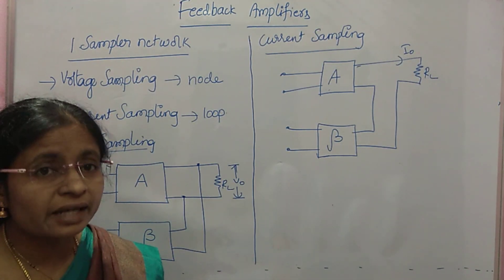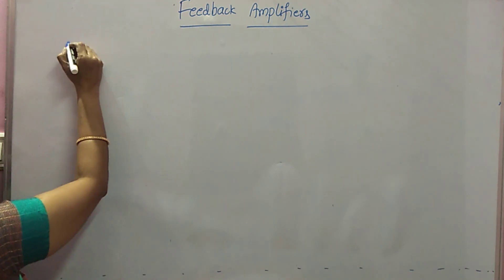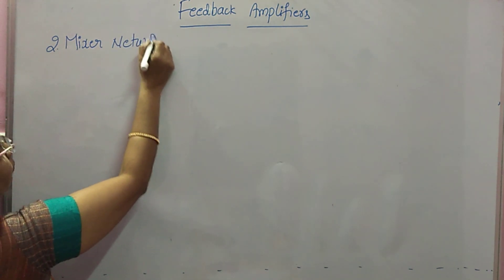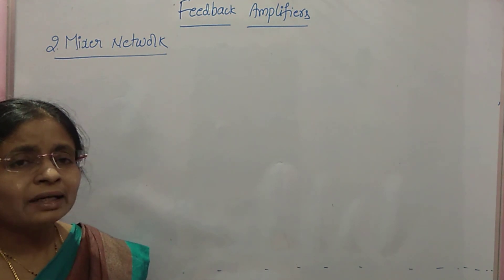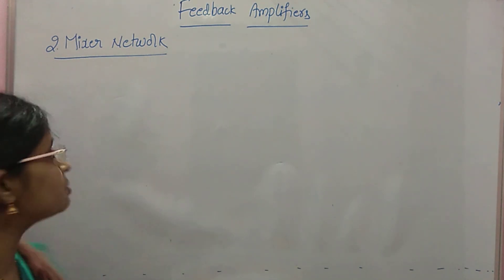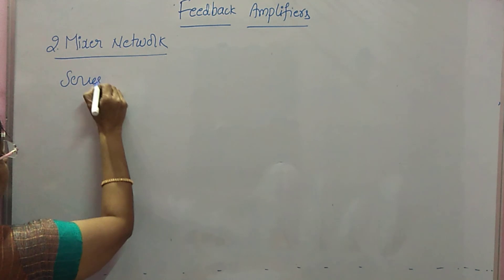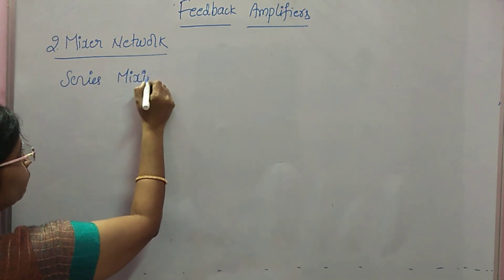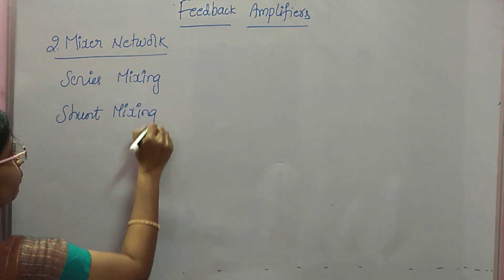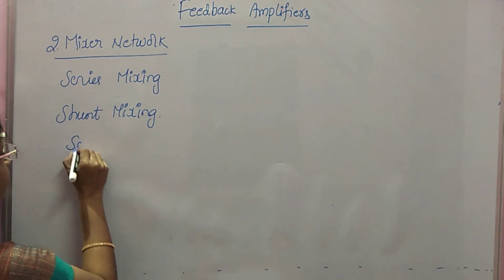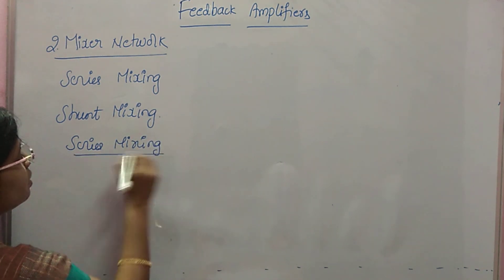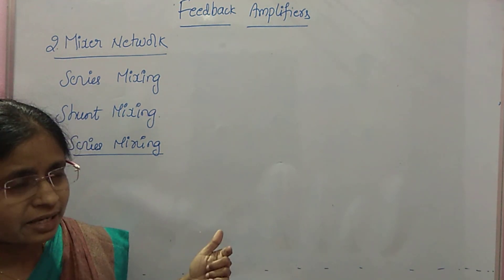The second network is mixer network. In the mixer network, there is mixing of the source signal and the feedback signal. Mixing is of two types: series mixing and shunt mixing. Remember: sampling is at the output side and mixing is at the input side.